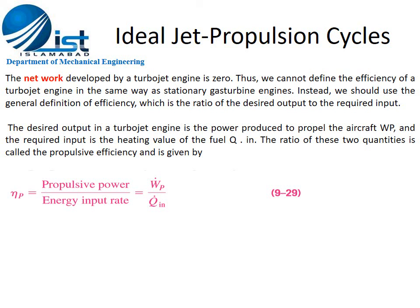In further analysis, the net work — turbine work minus compressor work — equals zero. Hence we cannot define thermal efficiency. Instead, we define propulsive efficiency, which equals propulsive power divided by the energy input rate: W_P divided by Q-dot_in. This ratio is called the propulsive efficiency, given by equation 9-29.